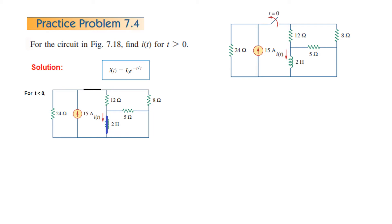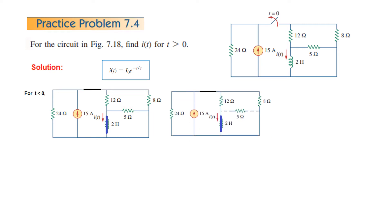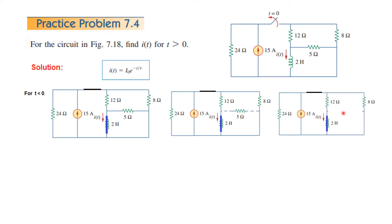If you look at this circuit, any current entering here will find the shortest path through the short circuit. So no current will flow through the 5 ohm resistor, and therefore we can say that this 5 ohm resistance is non-existent — it does not have any effect on the circuit and we can just remove it. So we remove this, and now this is the circuit.